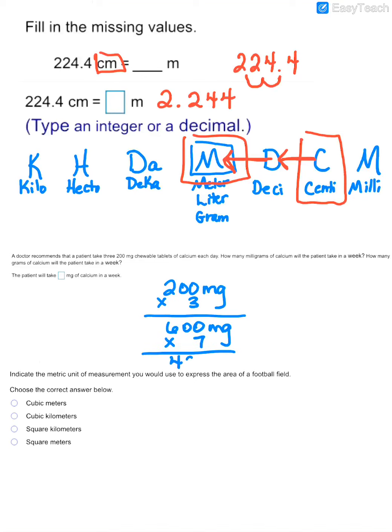So 600 milligrams a day times seven days. And I would say that that patient takes 4200 milligrams each week.